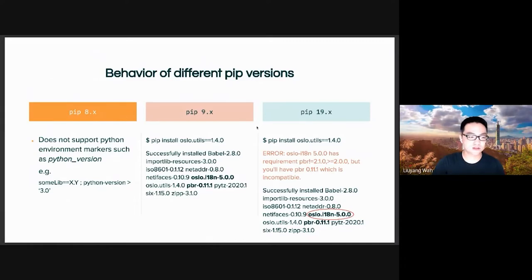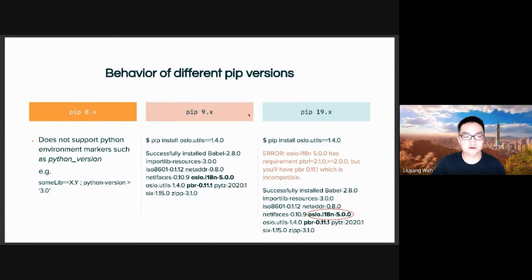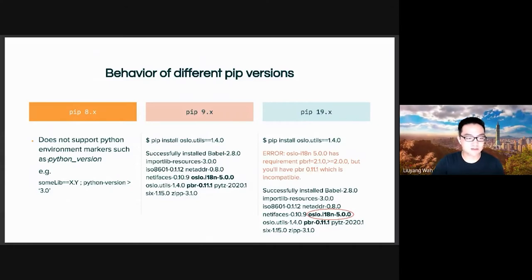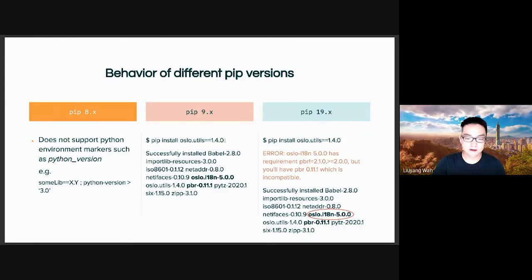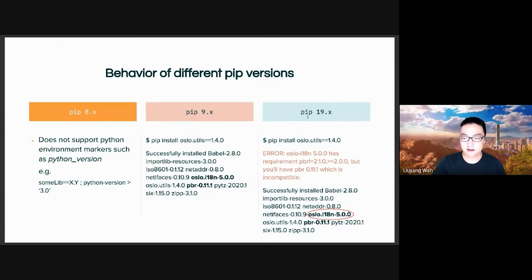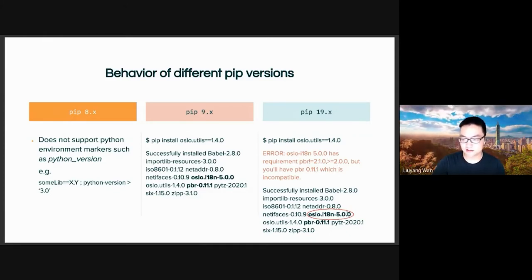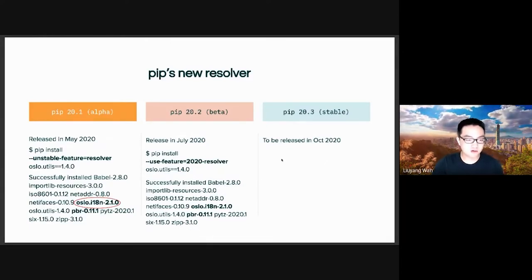Different pip versions behave very differently. For example, pip 8 doesn't support Python environment markers such as python_version, which we use to install a package just for Python 2 or Python 3. A very famous example is oslo.utils == 1.4.0. If you install this using pip 9, it won't resolve the correct versions and won't show any error message. If you install using pip 19, it will show a version conflict error but still won't be able to install the correct version.